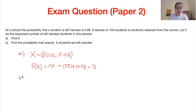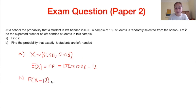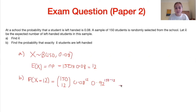Part b: find the probability that exactly k students are left-handed. We want P(X = 12). Using the binomial formula, this is 150 choose 12 times 0.08 to the power of 12 times 0.92 to the power of 138. Working that out on your calculator, you should get 0.119, remembering to round to three significant figures as required in exam papers.